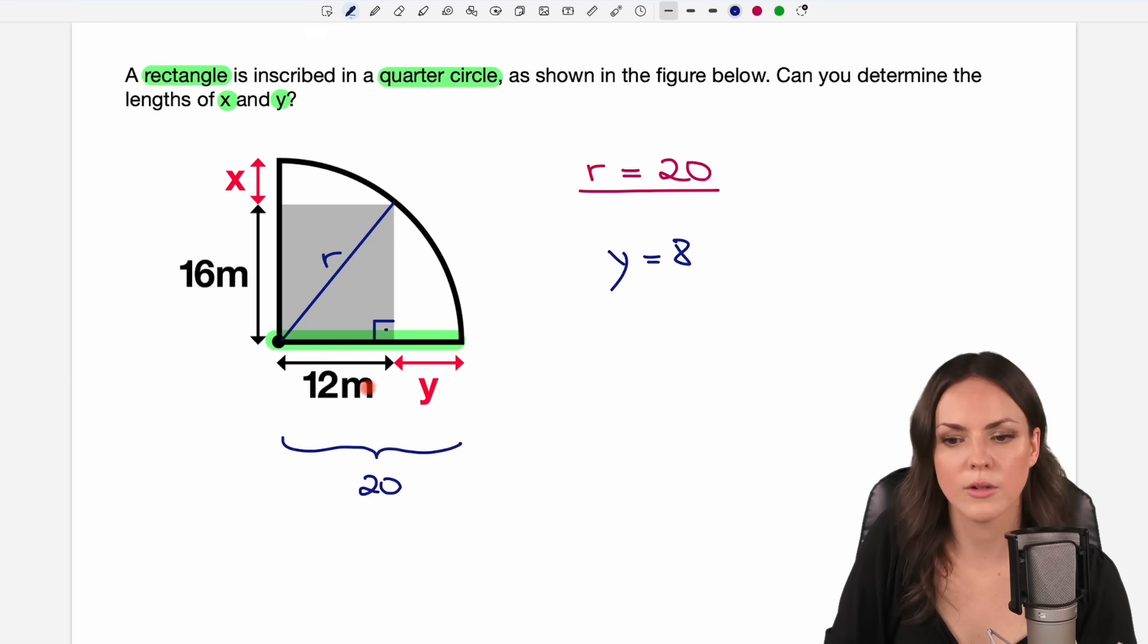If I want to use the units, I can call it 8 meters then. And the same for my x, I know that this whole thing, my radius, is of length 20. So if this is 16, then my x has to equal 4 meters.